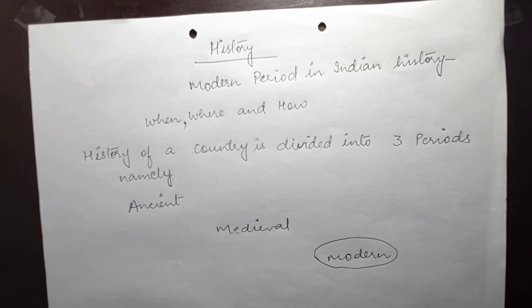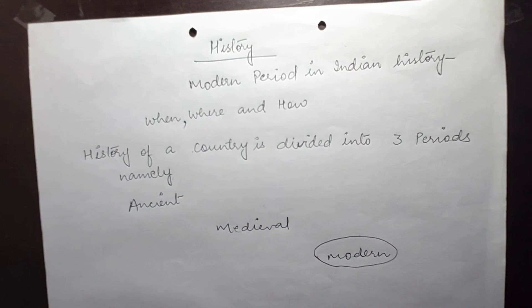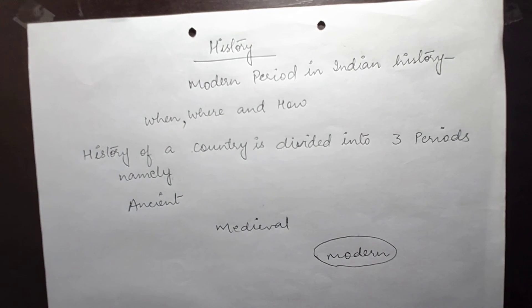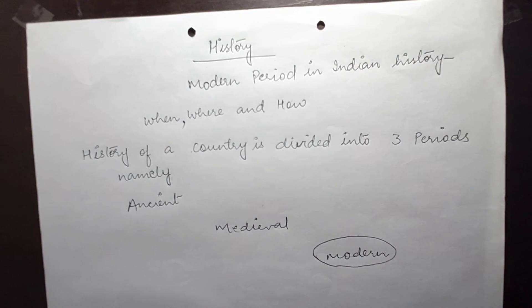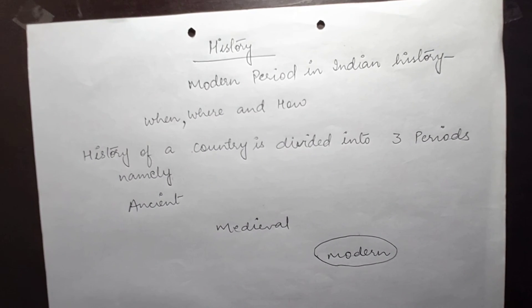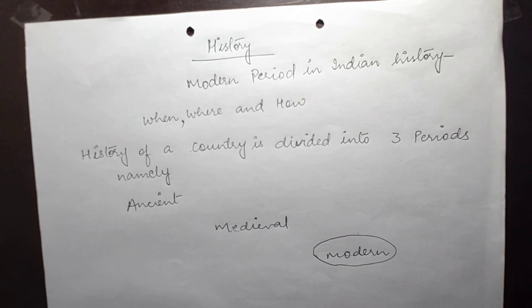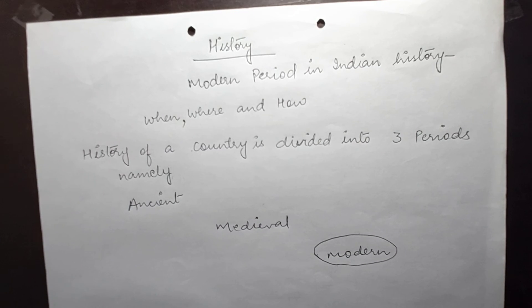Now, children, this is all about the developments that took place in the world. Now, coming to the part of the topic, that is, sources for studying the history of the modern period.